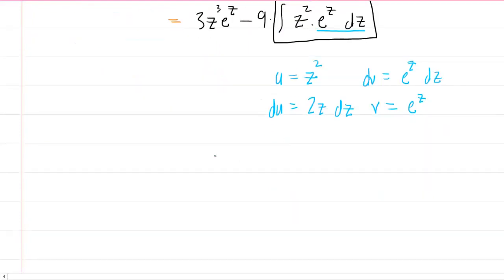Proceeding with the integration by parts formula, which, in a nutshell, is uv minus integral of vdu, we'll just start plugging in. So we take our u, z squared, times our v, e to the z, minus the integral of our v times du, which is 2z dz.